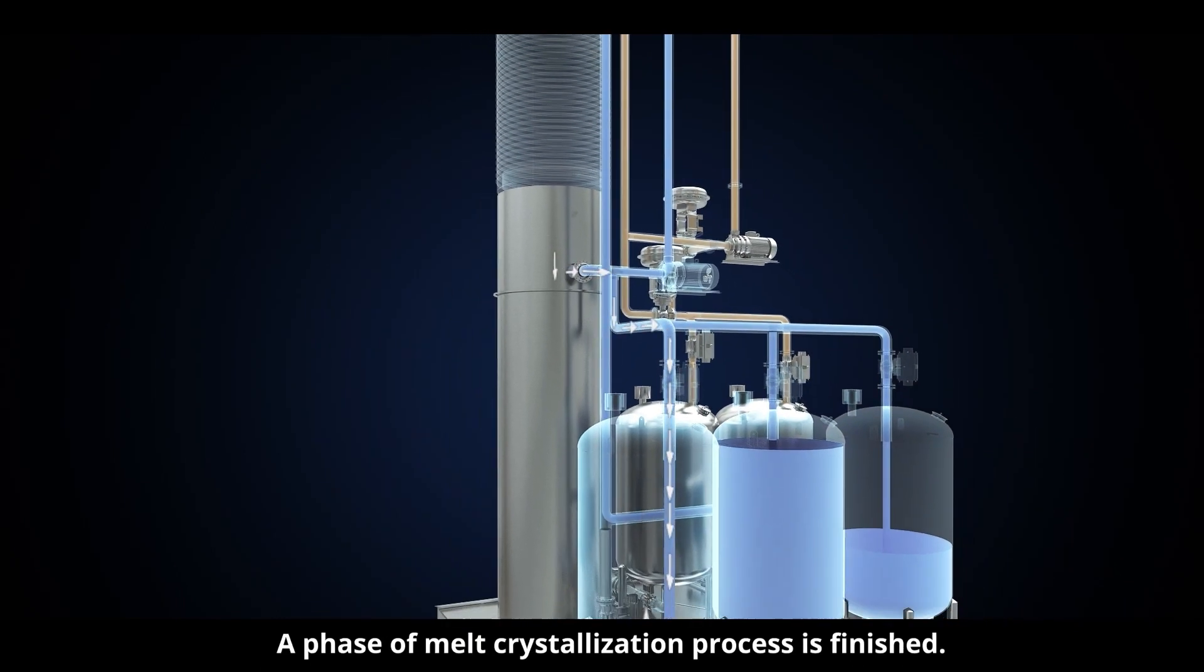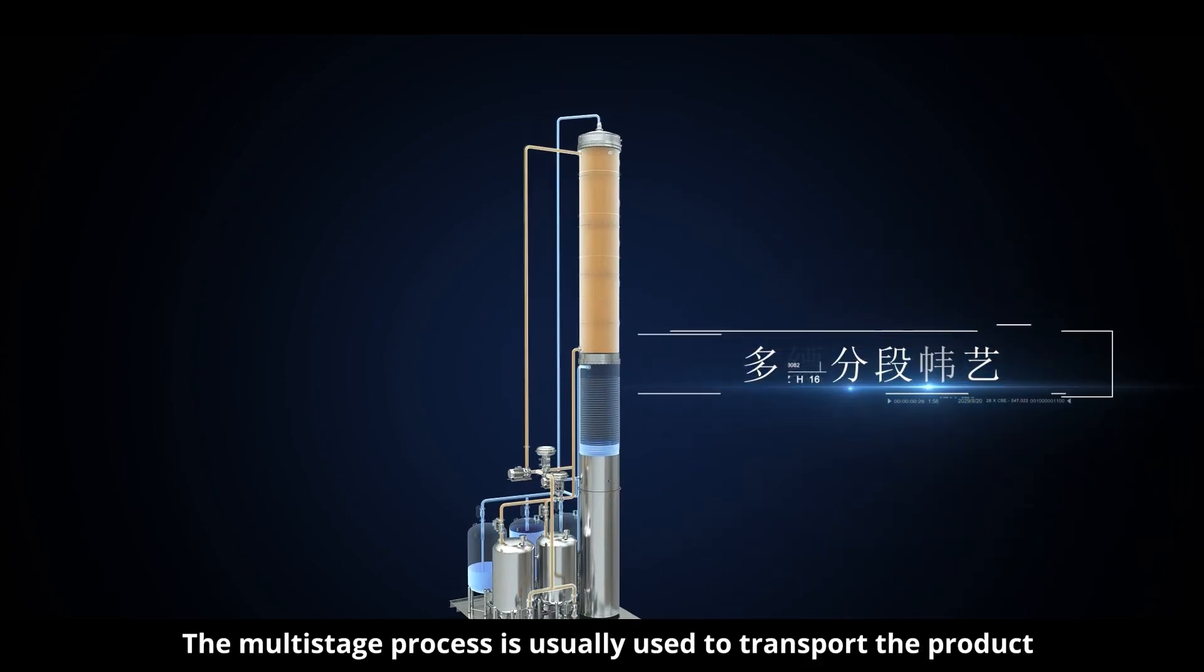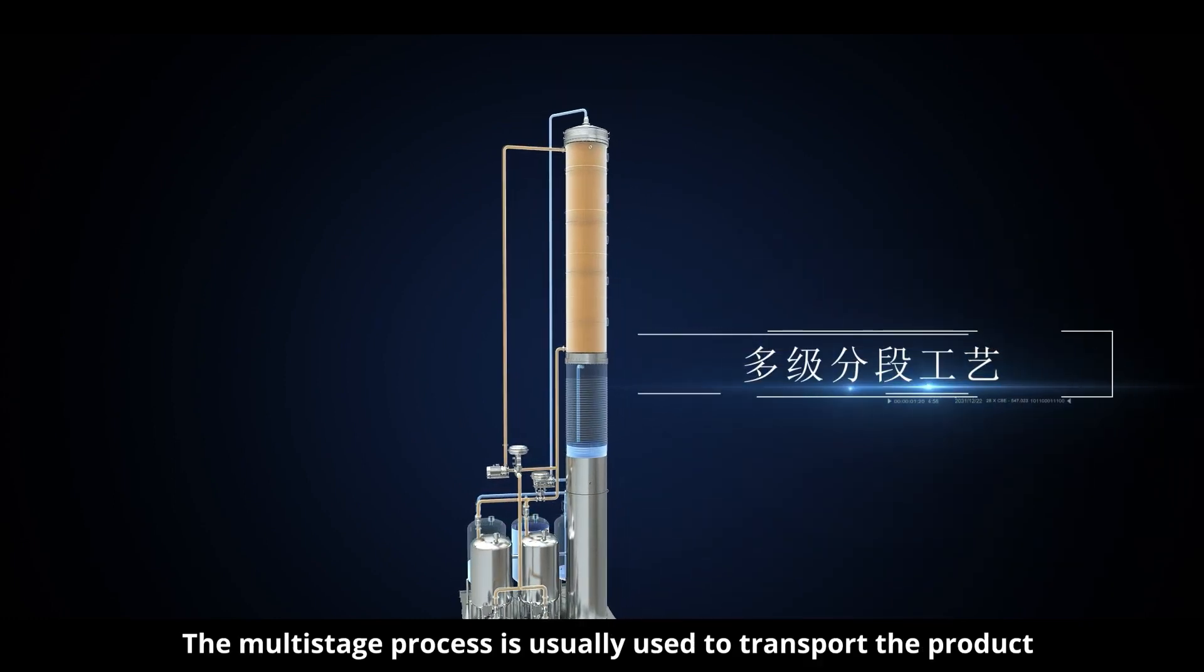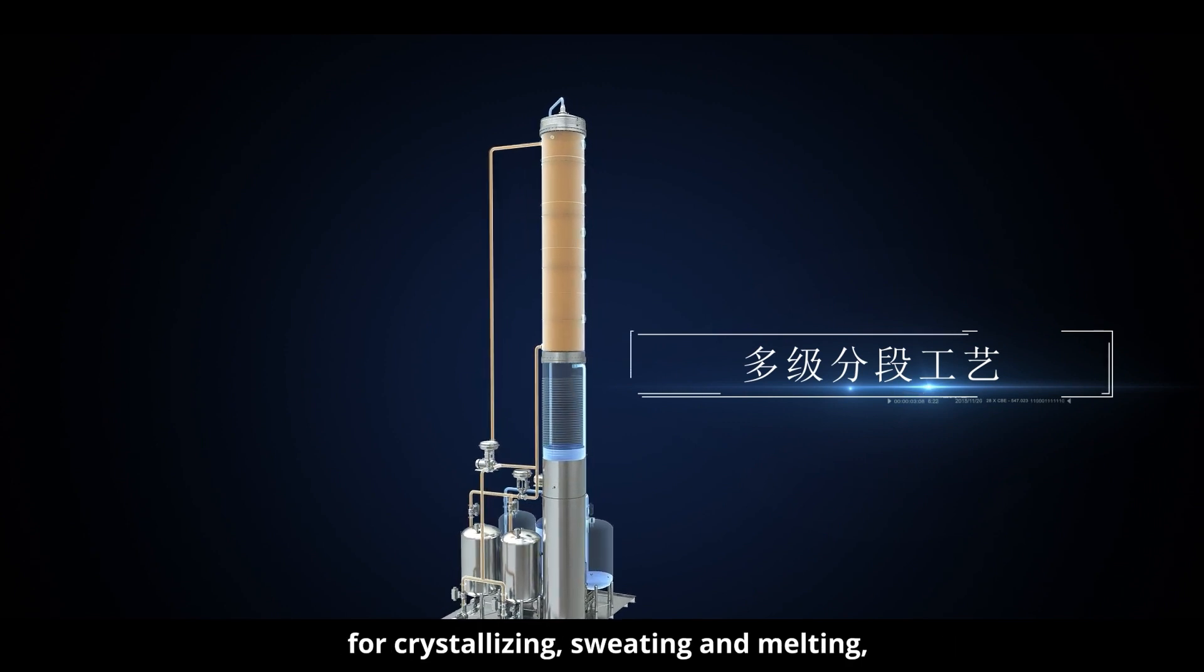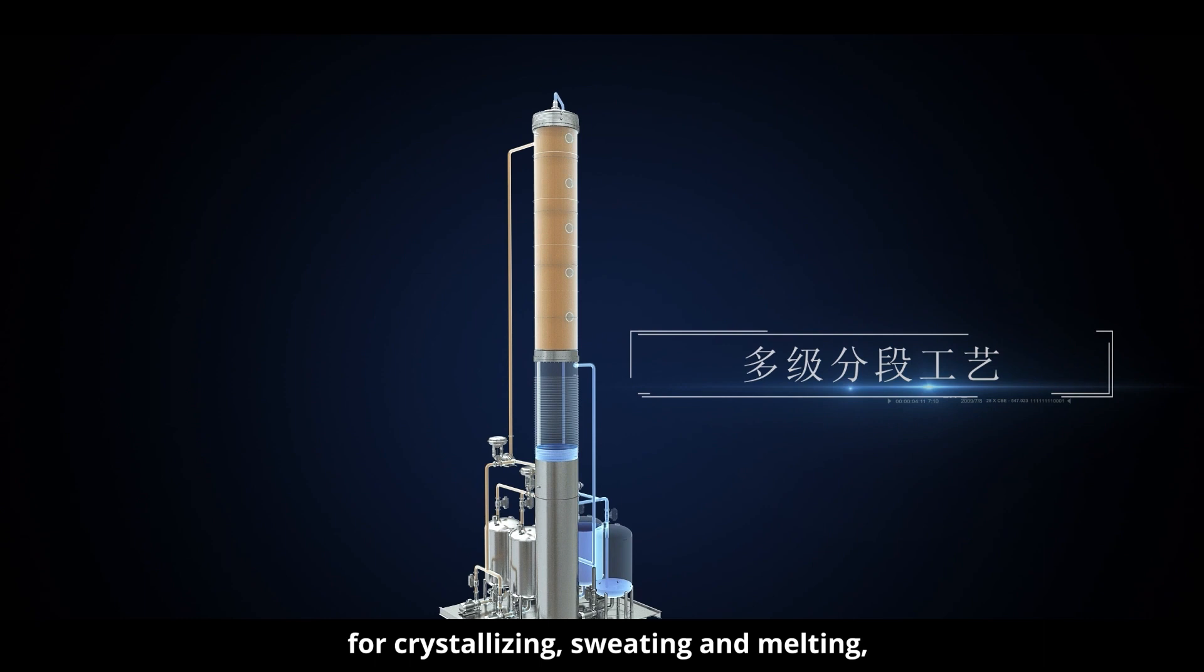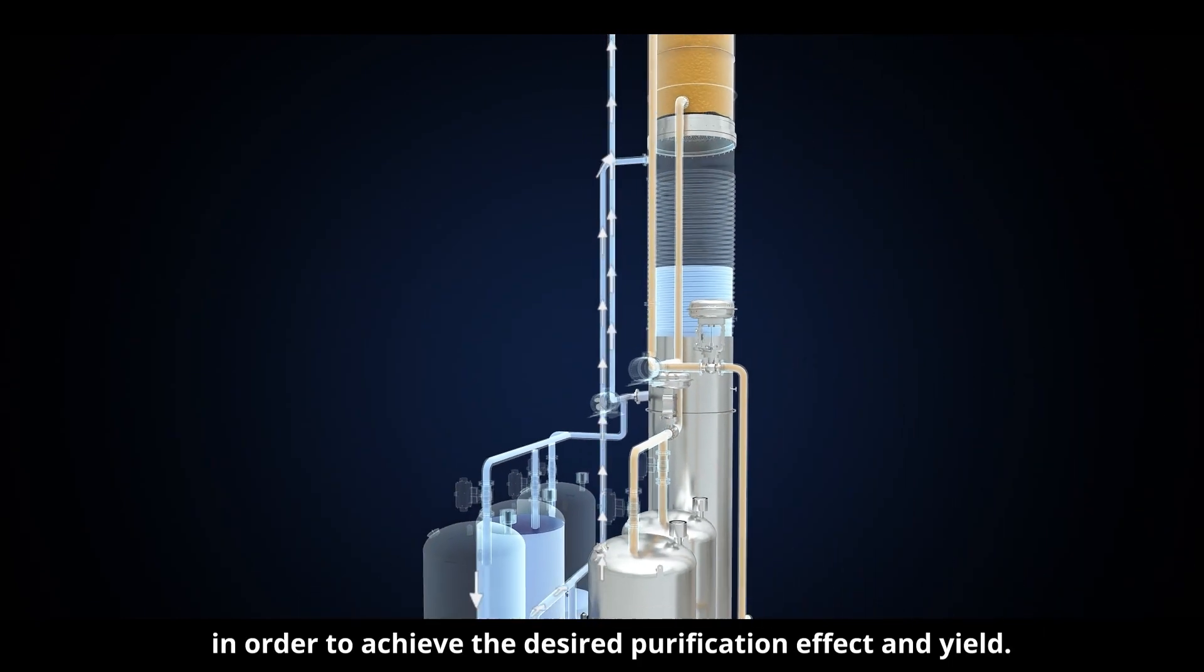A phase of melt crystallization process is finished. The multistage process is usually used to transfer the product and residual liquid of the first stage to the crystallizer for crystallizing, sweating and melting, in order to achieve the desired purification effect and yield.